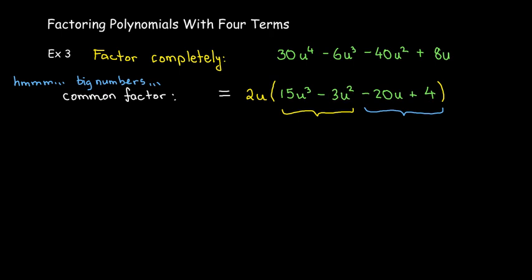Or the first pair has a common factor of 3u squared. And in the second pair, it may not be clear if I want to factor out a 4 or a negative 4. But I'm going to factor out a negative 4 again because I want to have a positive number multiplied by u. So now, after I do that,